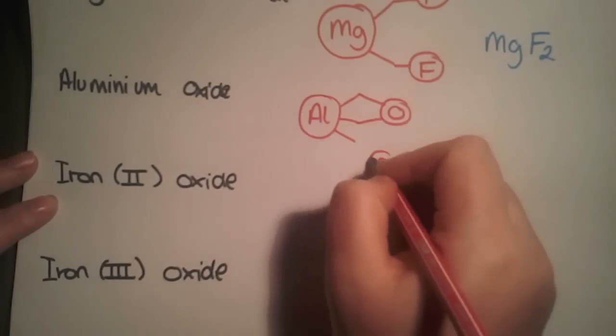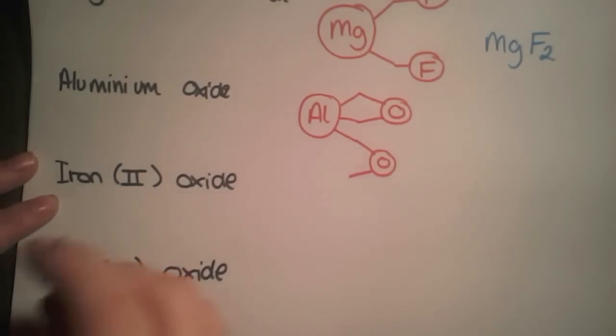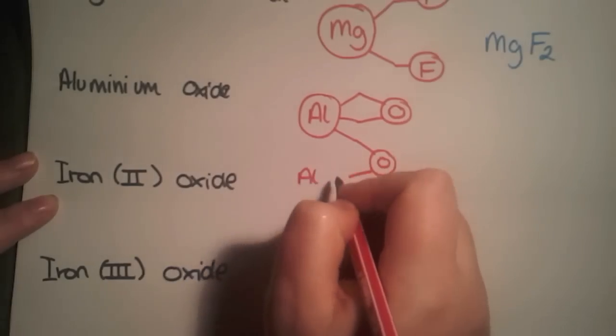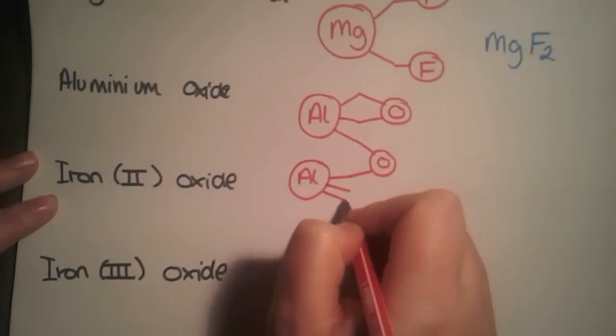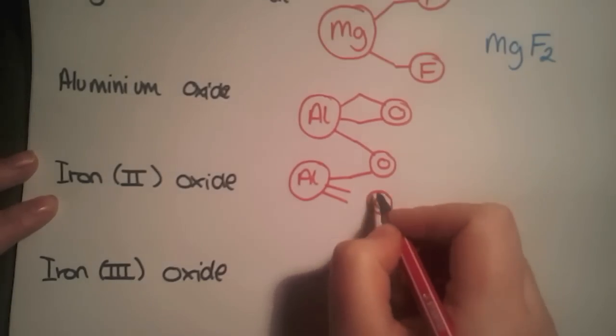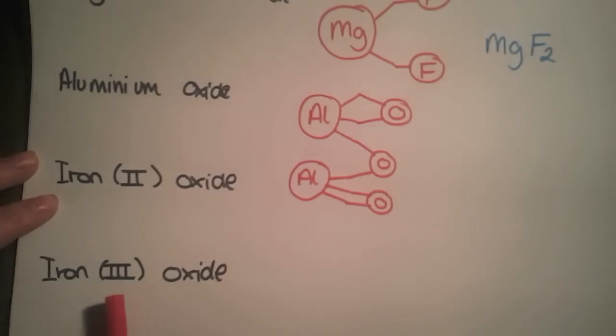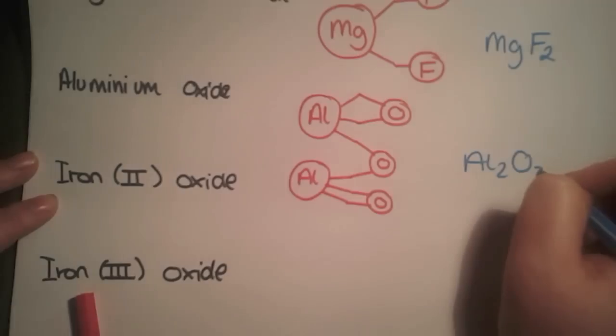So you draw your oxygen in, and now oxygen has a spare arm, so you hop to the other side, put in an aluminum, and now aluminum has two arms, so you can put in a final oxygen to fill up all of those arms. Counting up what we have, we have Al2O3.